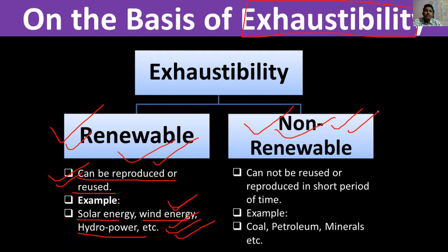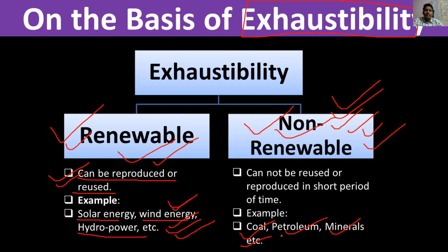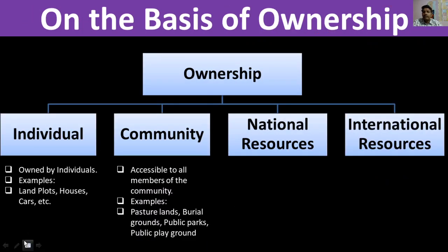Non-renewable resources are those which, once used, cannot be reused immediately — it takes millions of years to form them again. Examples include coal, petroleum, and minerals like gold, copper, and iron. While minerals can be recycled, coal and petroleum once used cannot be reused — they are exhausted and take very long to form again.